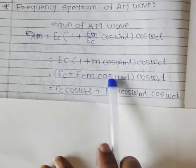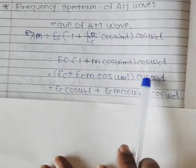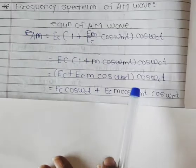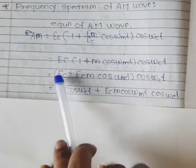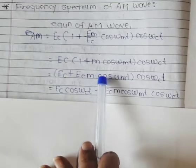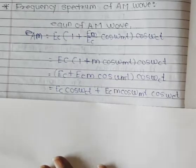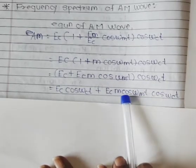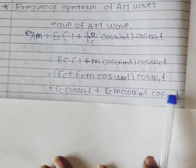E_c*m*cos(ω_m*t) will be multiplied by cos(ω_c*t). After multiplying this term and this bracket, you can observe that this is cos(ω_m*t) and cos(ω_c*t). These two terms will use the formula cos(a)cos(b).